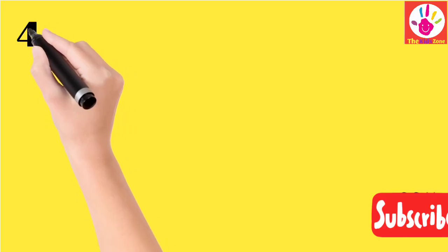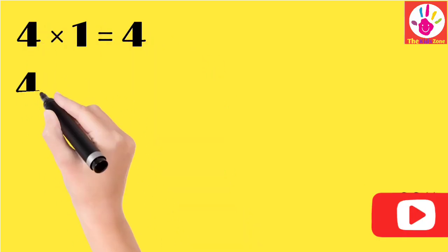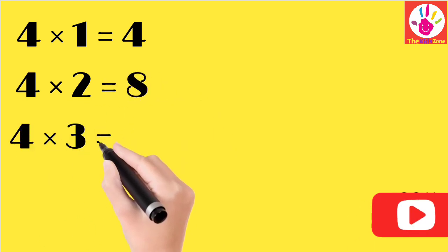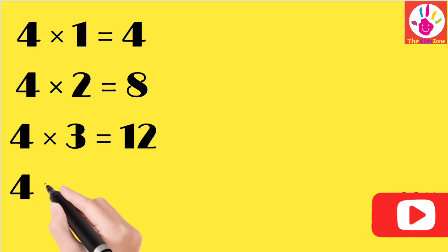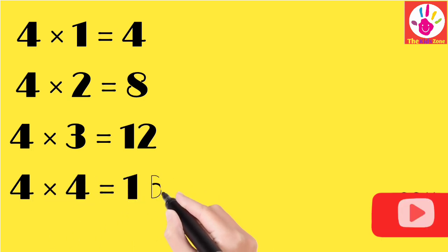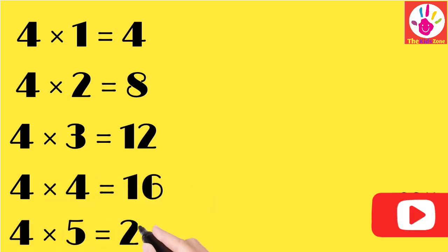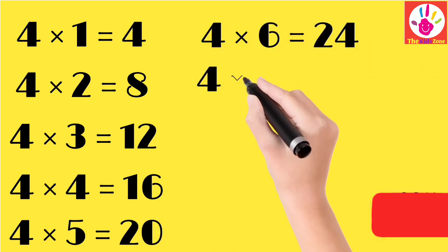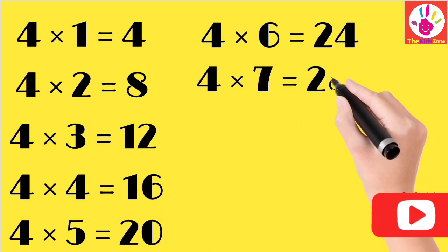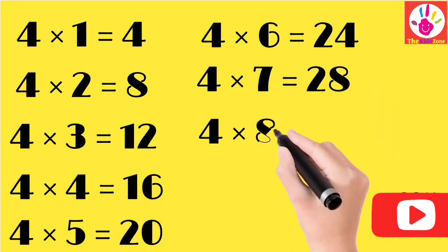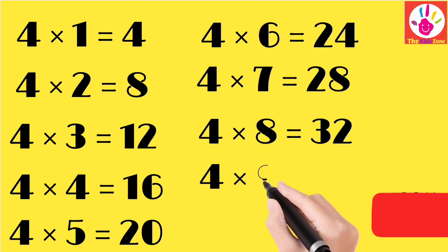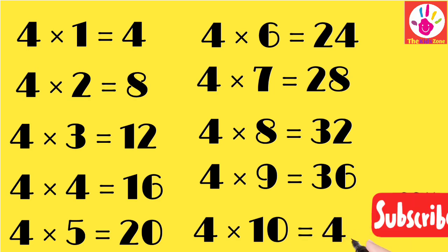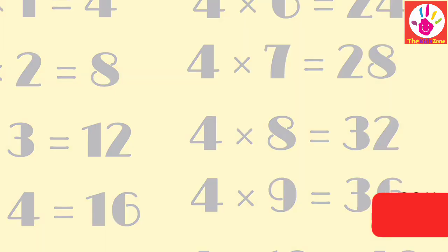Table 4: 4 ones are 4, 4 twos are 8, 4 threes are 12, 4 fours are 16, 4 fives are 20, 4 sixes are 24, 4 sevens are 28, 4 eights are 32, 4 nines are 36, 4 tens are 40.